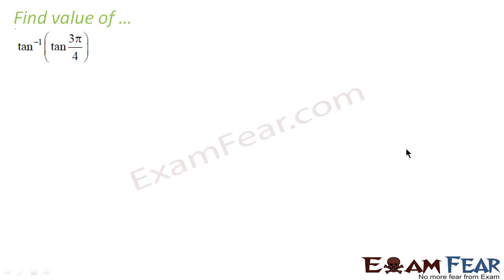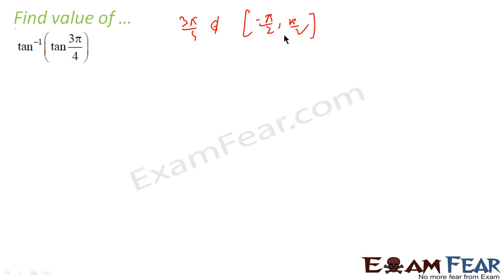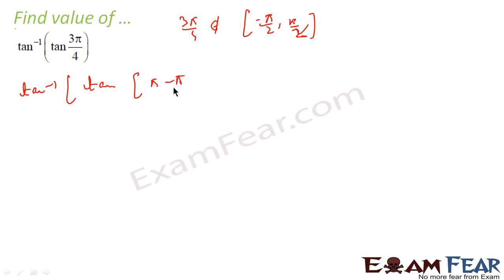Let's take one more similar question: tan inverse of tan(3π/4). Here, 3π/4 is not in the principal interval. The principal interval for tan is minus π/2 to π/2. So what we have to do is rewrite tan(3π/4) as tan(π - π/4).